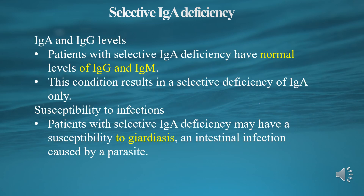Patients with selective IGA deficiency have normal levels of IgG and IgM. This condition results in a selective deficiency of IGA only. Patients with selective IGA deficiency may have a susceptibility to giardiasis, an intestinal infection caused by a parasite.